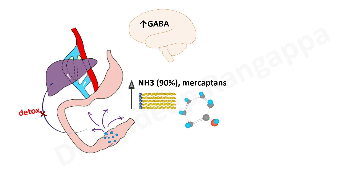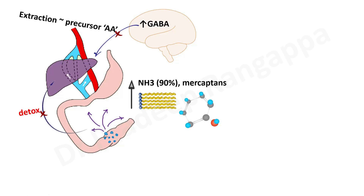For encephalopathy, the brain has to be involved. One of the etiological reasons is an increase in GABA levels, leading to GABA-mediated inhibition of neurotransmission. This increase in GABA in the brain is shown to be due to failure to extract precursors of amino acids in the liver. Amino acid precursors have to be extracted in the liver, and failure of this leads to increased GABA levels in the brain.